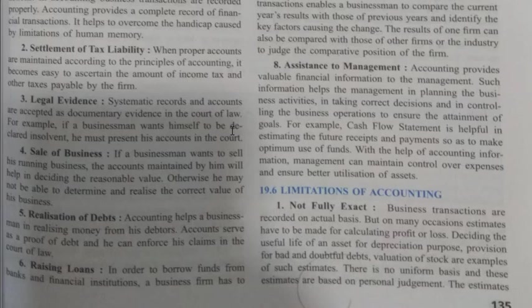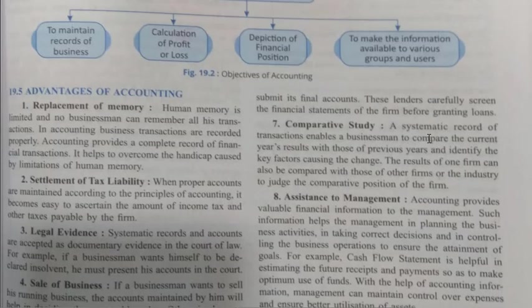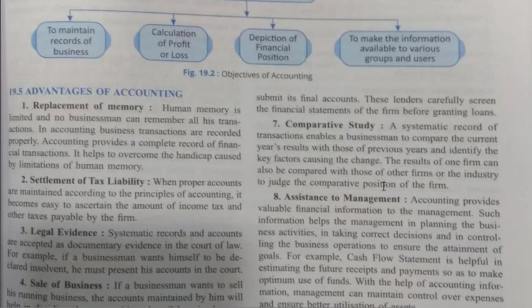Raising loans: in order to borrow funds from banks and financial institutions, a business firm has to submit its financial accounts. Lenders carefully screen the financial statements of the firm before granting a loan — so you can get a loan from the bank based on your accounts. Comparative study: systematic records enable a businessman to compare the current year's results with those of previous years and identify key factors causing change. The results of one firm can also be compared with those of other firms in the industry.